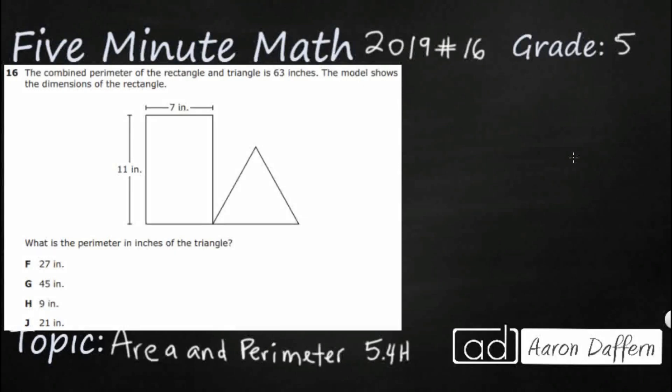Hello, and welcome to 5-Minute Math. Today we are looking at the 5th grade concept of area and perimeter. This is standard 5.4H in the great state of Texas, and we are using item number 16 off the 2019 released STAAR test.